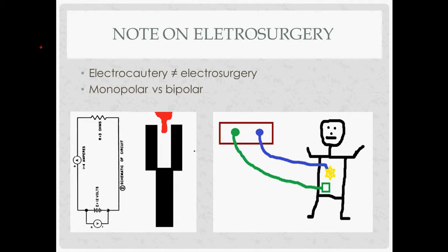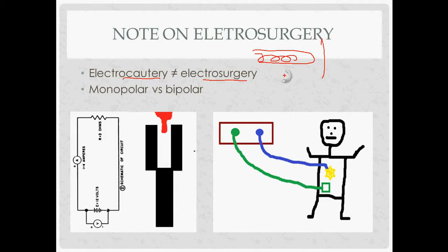Electrosurgery and electrocautery are actually a little different. Electrocautery is when you have a tool with an electrode inside that heats it up, and you touch the hot surface to whatever you're cutting or coagulating — it basically burns it. Whereas with electrosurgery, you have an electrode that transmits electricity outside of it, and the electricity transmitted is what does the actual cutting or coagulating.